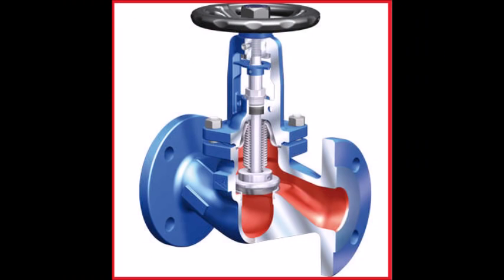The bonnet also contains the packing, a wearable material that maintains the seal between the bonnet and the stem during valve cycling. Plug or disc: The closure member of the valve, plugs are connected to the stem which is slid or screwed up or down to throttle the flow.